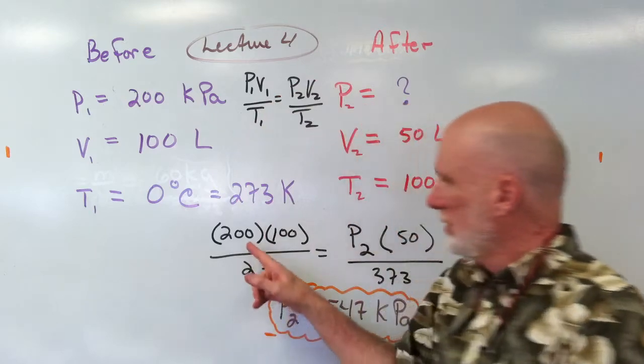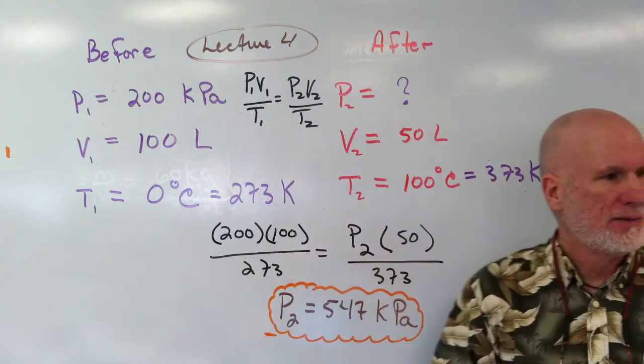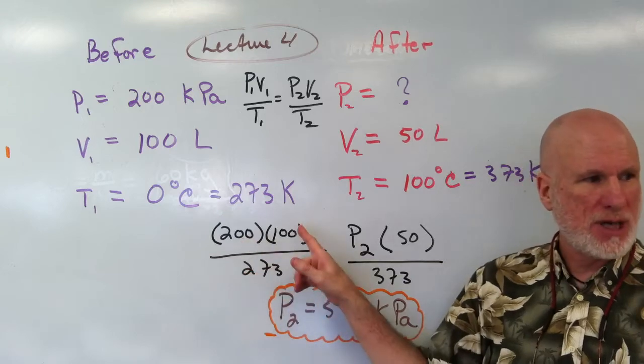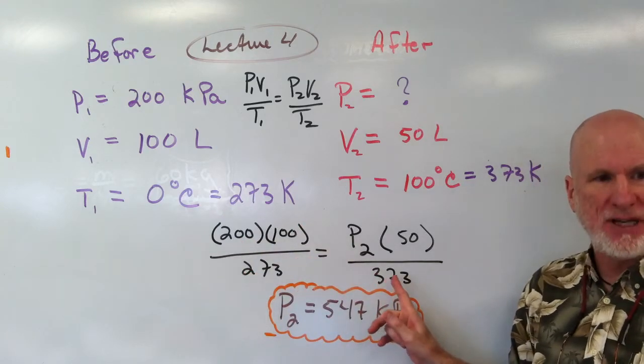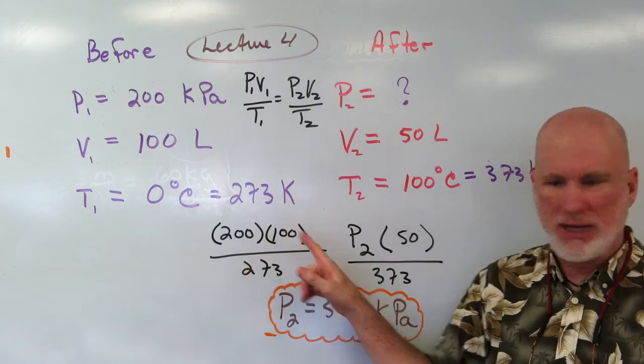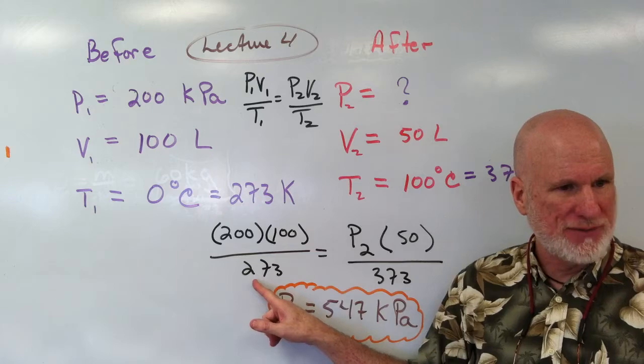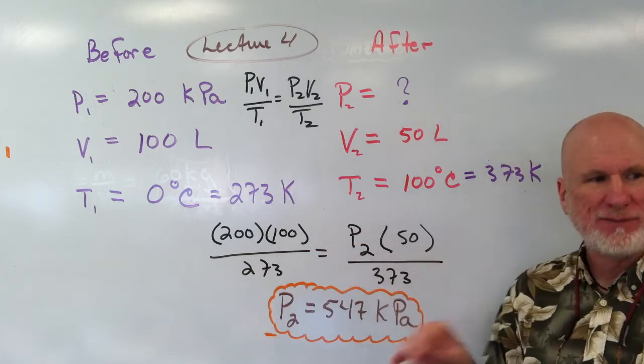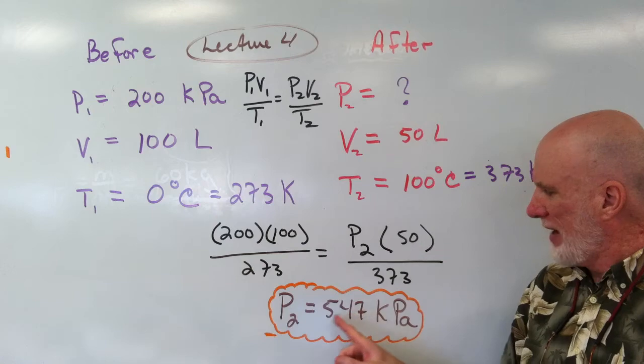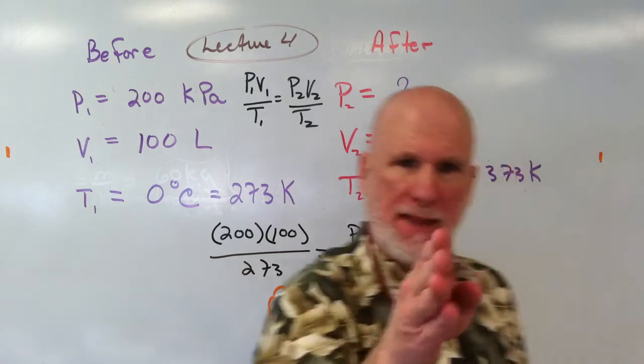Okay, so it's PV over T, PV over T. 200 times 100 times 373, cross multiply, 200 times 100 times 373, divided by 273, divided by 50, 547 kilopascals. Is that what you get? Yeah. Excellent.